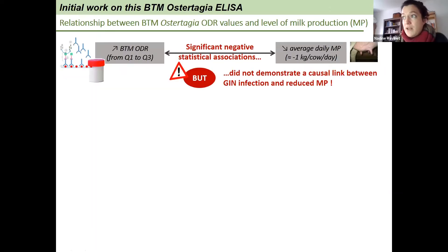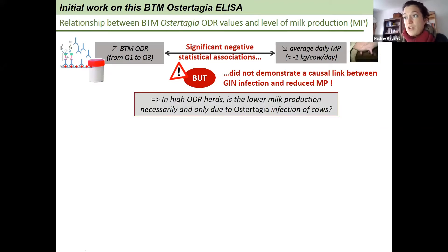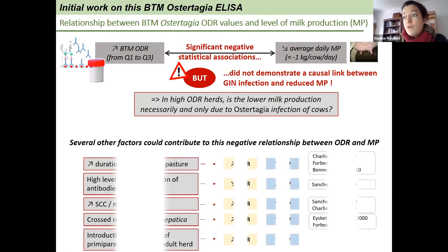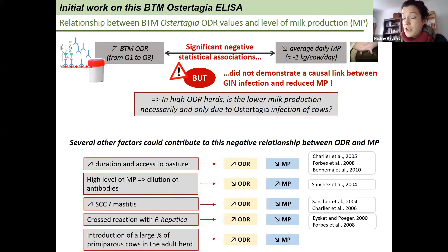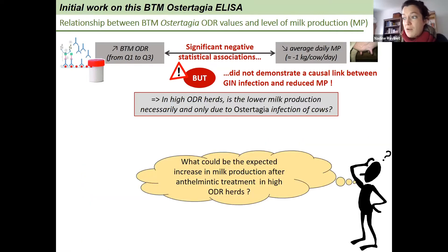However, those significant negative statistical associations did not demonstrate a causal link between gastrointestinal nematode infection and reduced milk production. So the question is: in high ODR herds, is the lower milk production necessarily and only due to Ostertagia infection? In fact, several other factors could contribute to this negative relationship between ODR and milk production without establishing any causality. When questioning this causality, we can wonder what could be the expected increase in milk production after anthelmintic treatment, especially in high ODR herds.